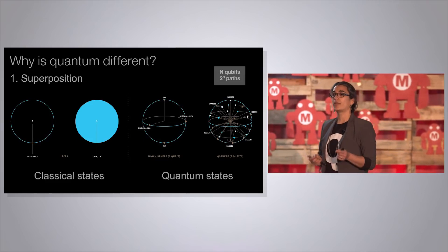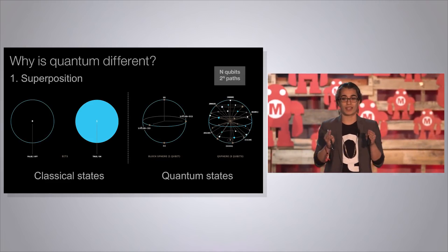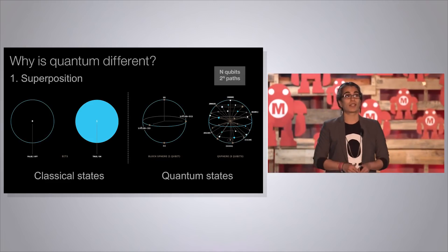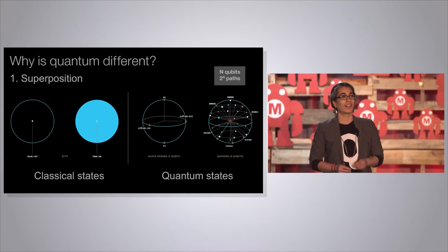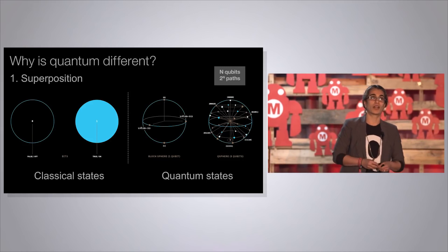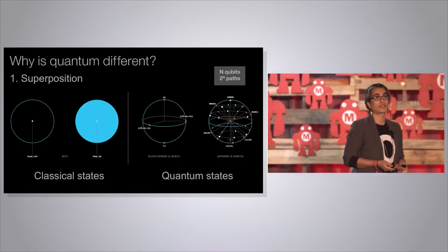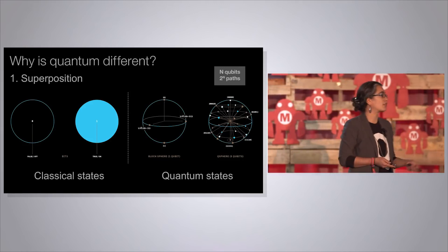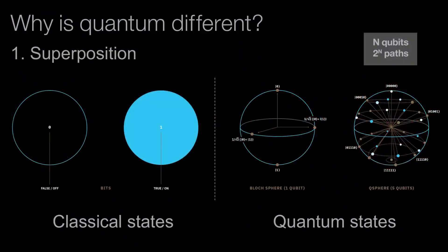If one qubit can be in a superposition of two states, then two qubits can be in a superposition of four states, and three qubits can be in a superposition of eight states. The possibility space you can explore is much more interesting and complex in quantum information. The diagram on the right is showing you a superposition of five qubits — with five qubits you can be in a superposition of 32 states. That's superposition, the first key property.